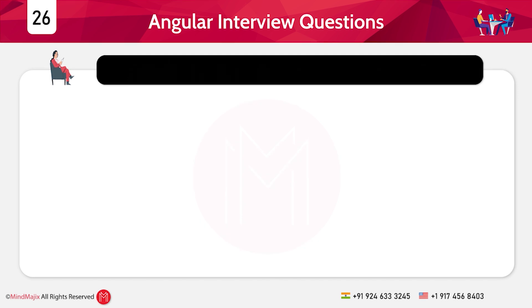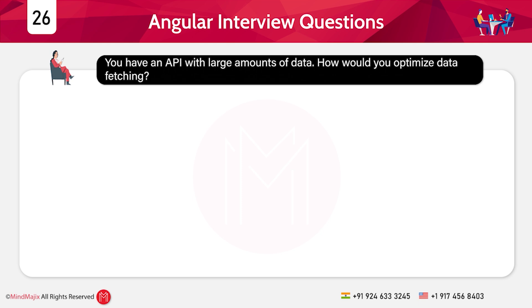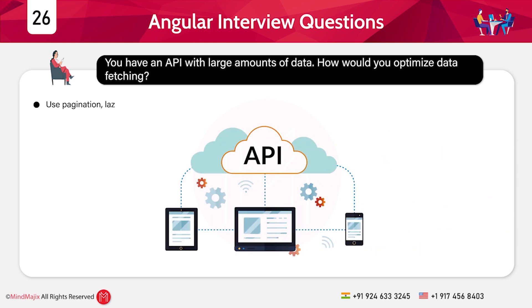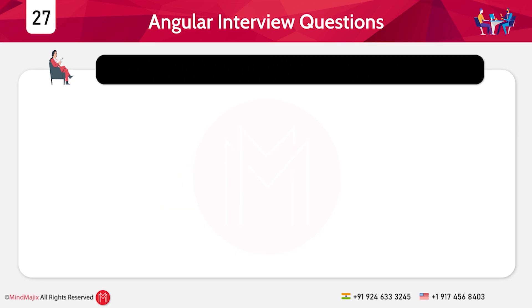Now entering advanced scenario-based questions. The twenty-sixth question: You have an API with large amounts of data — how would you optimize data fetching? Use pagination, lazy loading, and RxJS operators like debounceTime and switchMap.